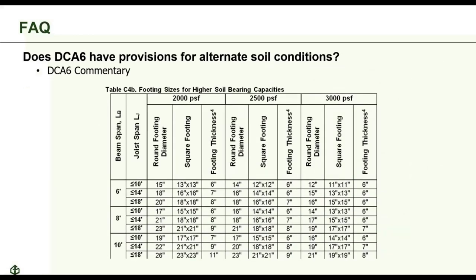Does the DCA-6 have provisions for alternate soil conditions? Yes — another example of an alternative provision found in the commentary is soil bearing capacity. The standard DCA-6 tables are based on 1,500 PSF soil. The commentary provides alternative footing sizes based on higher soil bearing capacities.